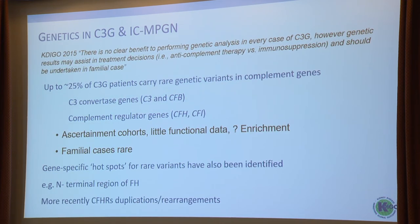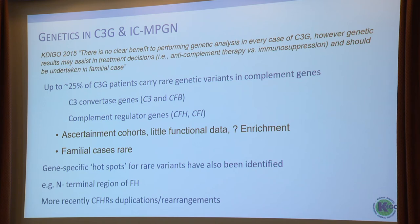More recently, the role of FACCP antibodies in post-infectious glomerulopathy probably needs discussion. These may help with diagnosis, but there aren't currently antibody-eliminating therapies. Genetics of C3G and MPGN: in 2015 we said there's no clear benefit to performing genetic analysis in every case of C3G. Up to 25% of C3G will carry genetic variants, predominantly C3, Factor B, Factor H, Factor I — but these are ascertainment cohorts with little functional data. There are familial cases where it segregates, but at the moment genetics doesn't alter what we do.